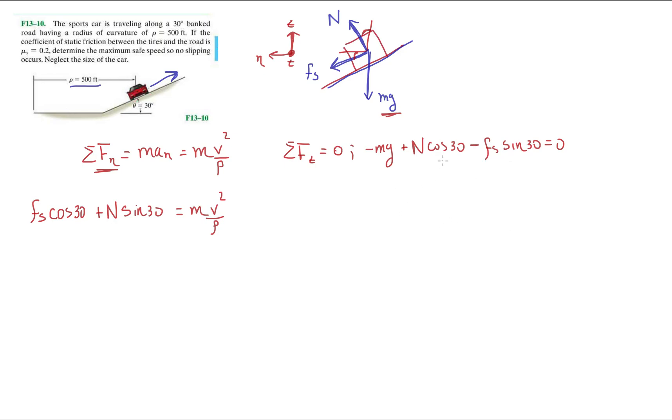So another thing we have to know is that friction force is equal to mu s times the normal. So let's rewrite this equation here as minus mg plus N cosine 30 minus mu s N sine 30 equals zero.